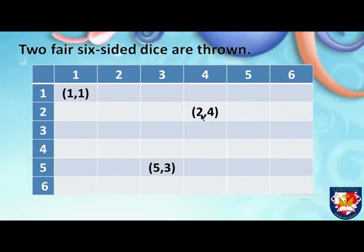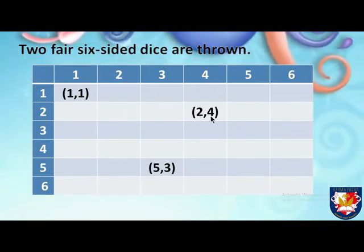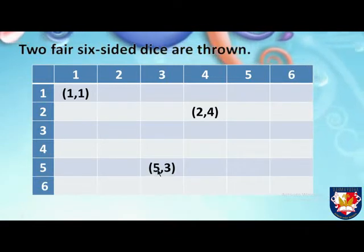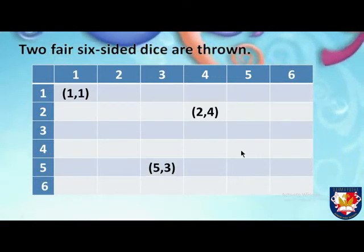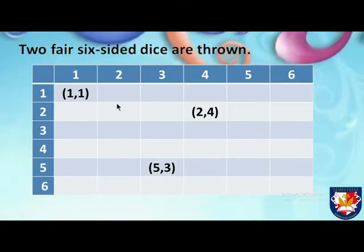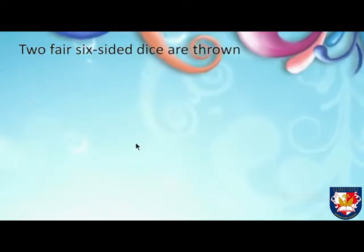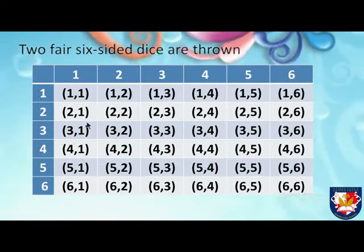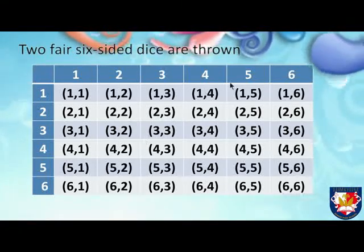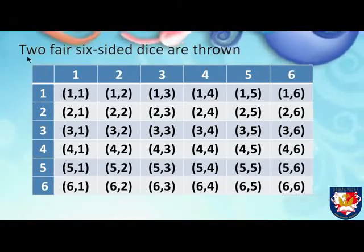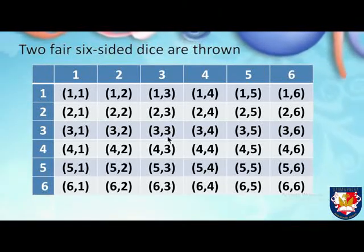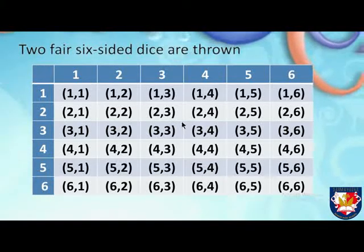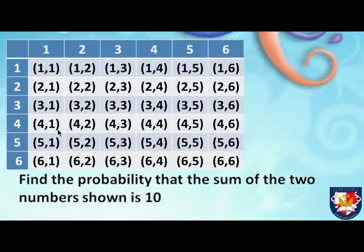Two and four means we got two on the first die and four on the second. Five and three means we got five on the first and three on the second. We can complete all outcomes using this table. There are exactly 36 outcomes when rolling two fair six-sided dice, as you can see here.